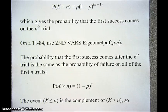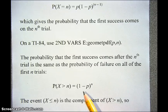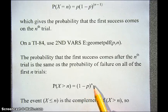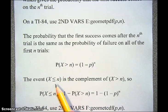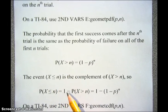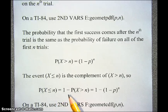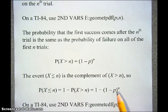You can also find the probability that the first success comes after the Nth trial. That's the same as the probability of failure on all the first N trials, which is (1 minus P) to the Nth power. So the probability that X is greater than N is (1 minus P) to the Nth power. The complement of that event is X less than or equal to N, found by taking 1 minus (1 minus P) to the Nth power.